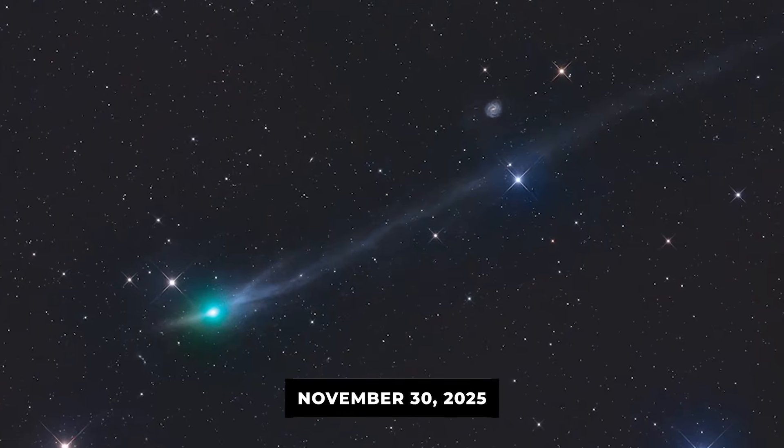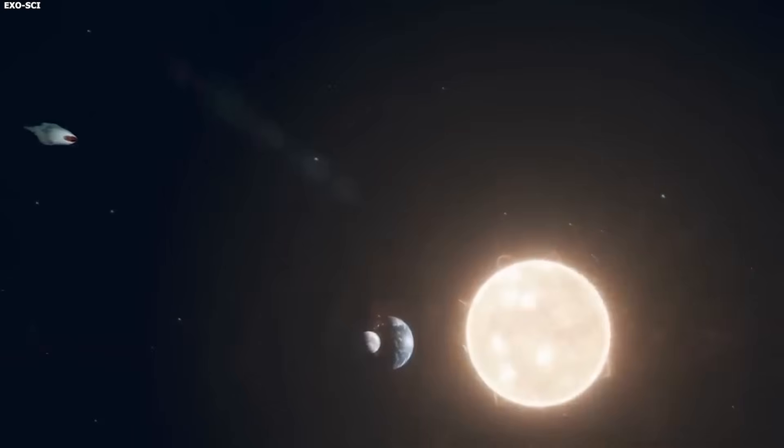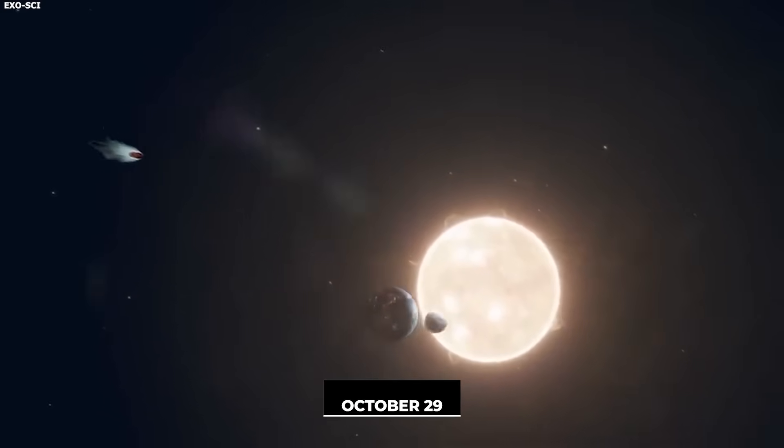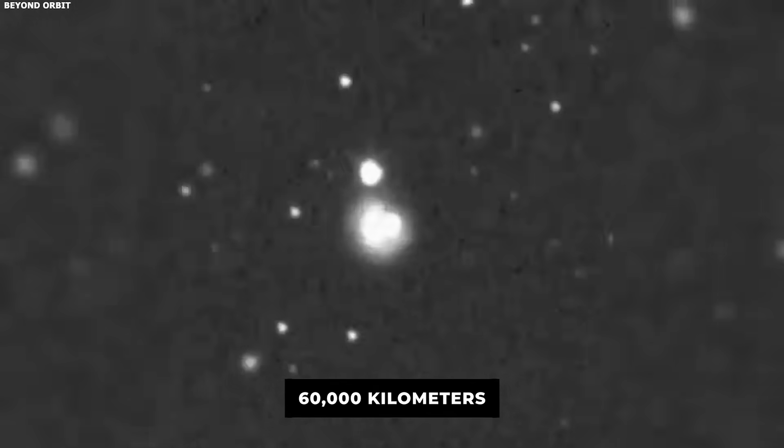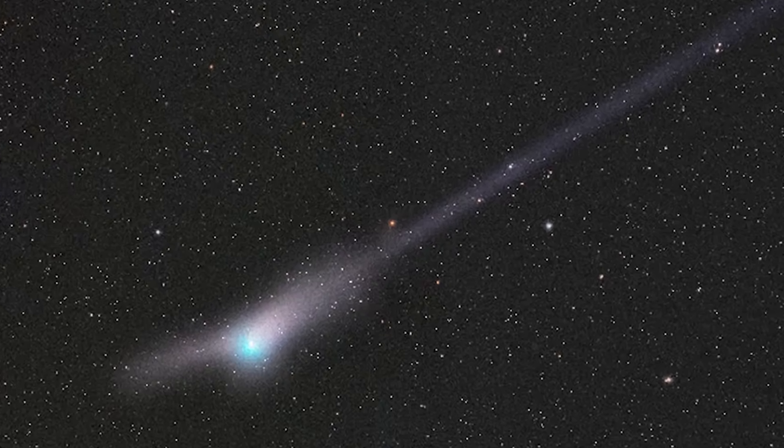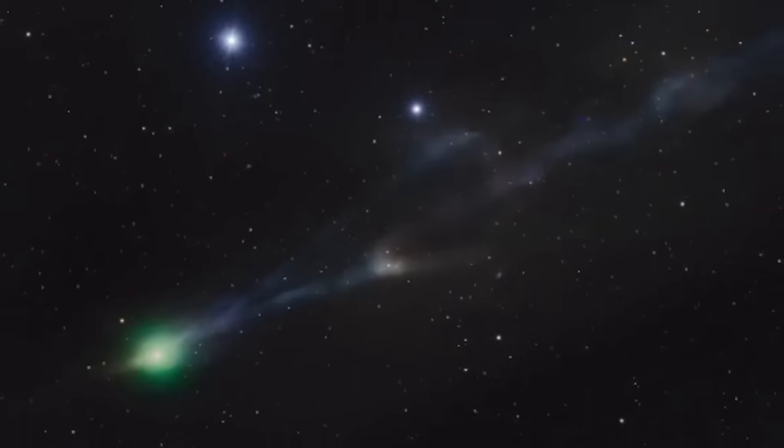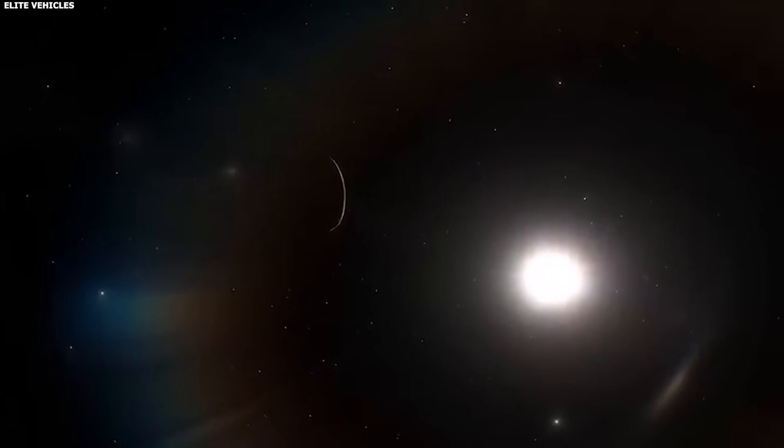On November 30th, 2025, Hubble observed 3I Atlas again. The comet was now receding from the sun. It had already passed perihelion on October 29th, and it was 1.91 times the Earth-sun distance away. The anti-tail was still there, still pointing toward the sun. The teardrop-shaped glow extended about 60,000 kilometers in the direction of the sun. That's about 10 times the radius of Earth. And it's not subtle. It's bright. It shows up clearly in the images. If anything, the anti-tail looked more defined in the November image than it did in July. The structure was sharper. The boundaries were clearer. Whatever is creating this feature, it's not fading away. It's persisting.